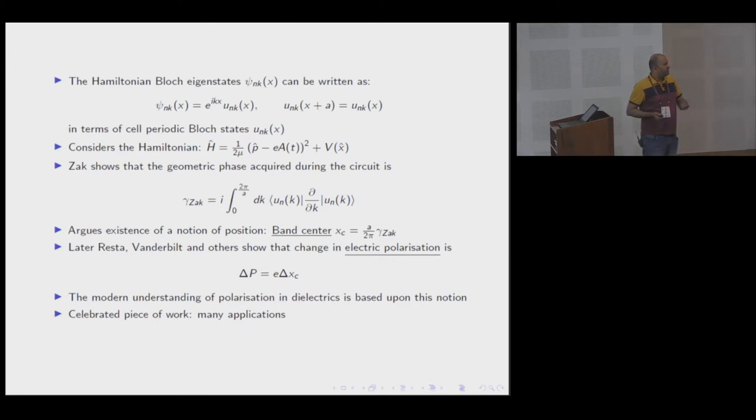He argued that this object defines a notion of coordinate, some kind of band center for the band. The essential idea: you do a Fourier transform of UNs over the band, and get what are called Wannier functions, which are position state representations. This d by dk can be thought of as a position operator in k space. This geometric phase and A over 2π were identified with band center.